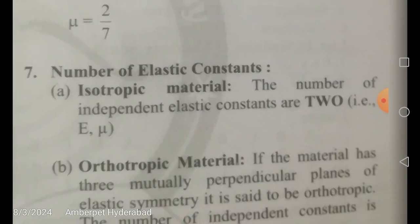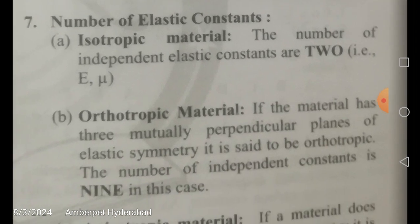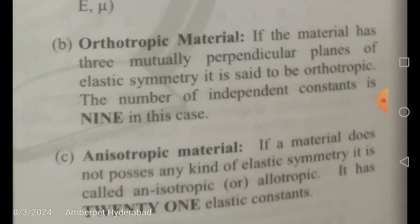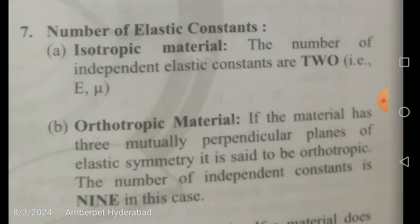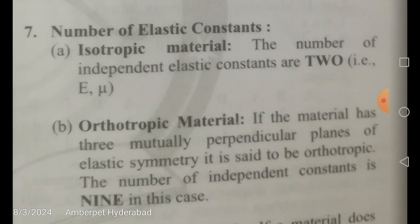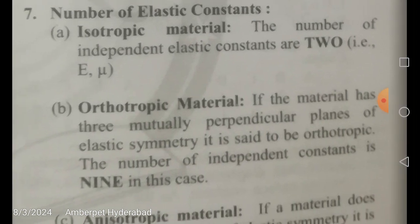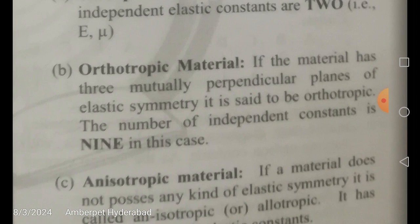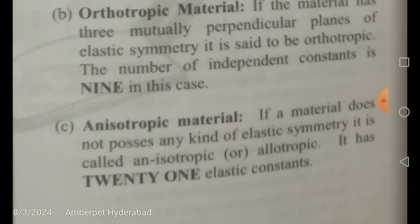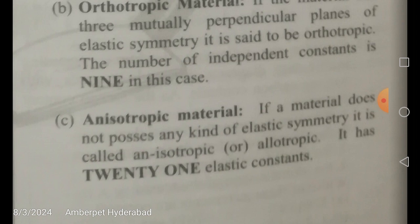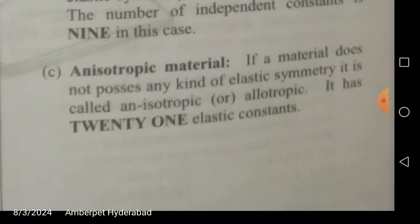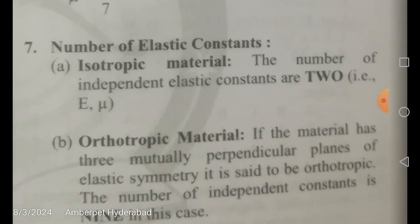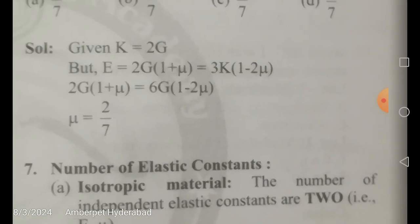There are three types of materials: isotropic, orthotropic, and anisotropic. For isotropic materials, the number of independent elastic constants is two — E and μ (Young's modulus and Poisson's ratio). For orthotropic materials, which have three mutually perpendicular planes of elastic symmetry, the number of independent constants is nine. For anisotropic (or allotropic) materials, which possess no elastic symmetry, there are 21 elastic constants. This information is very useful for TSAE and GENCO exams.